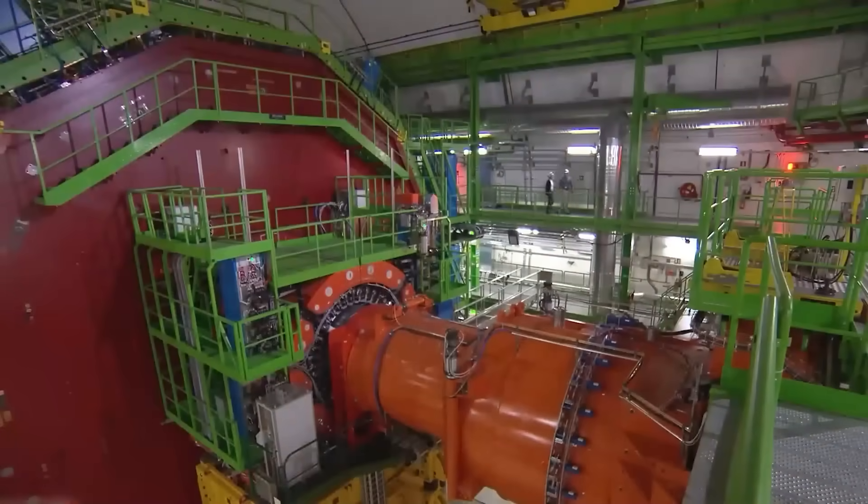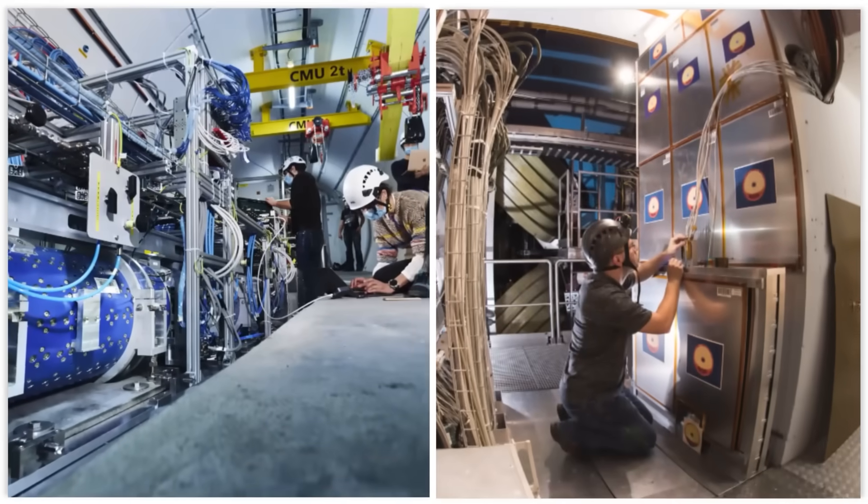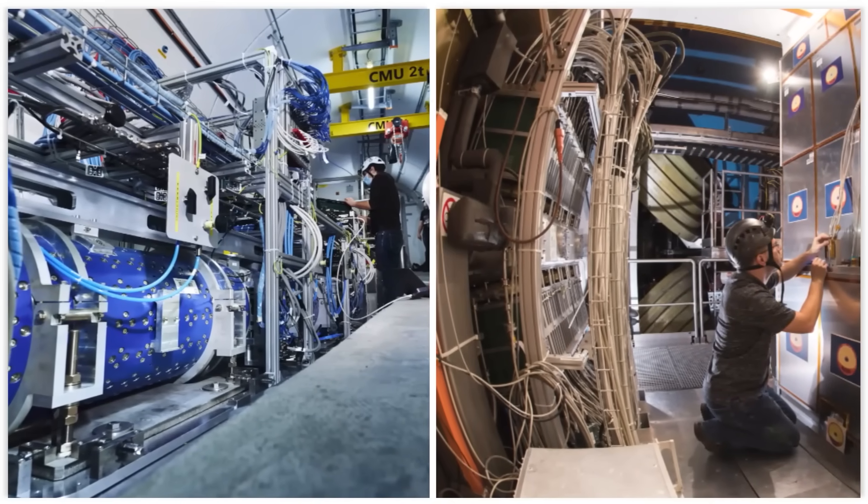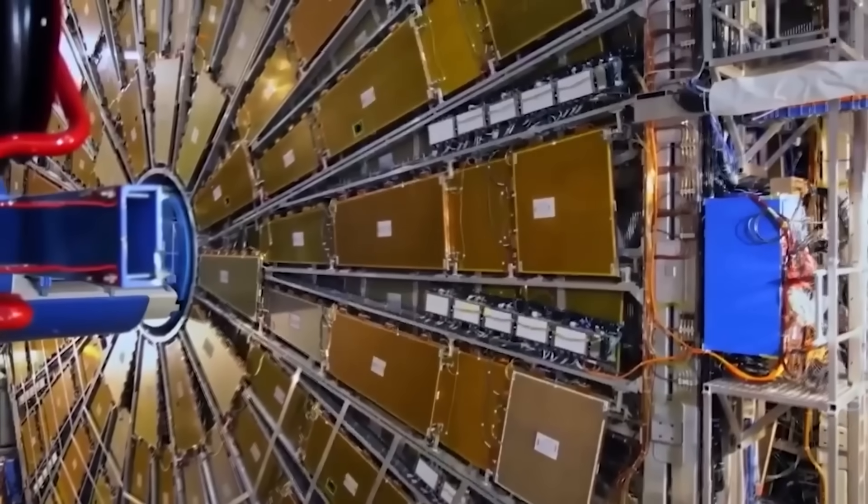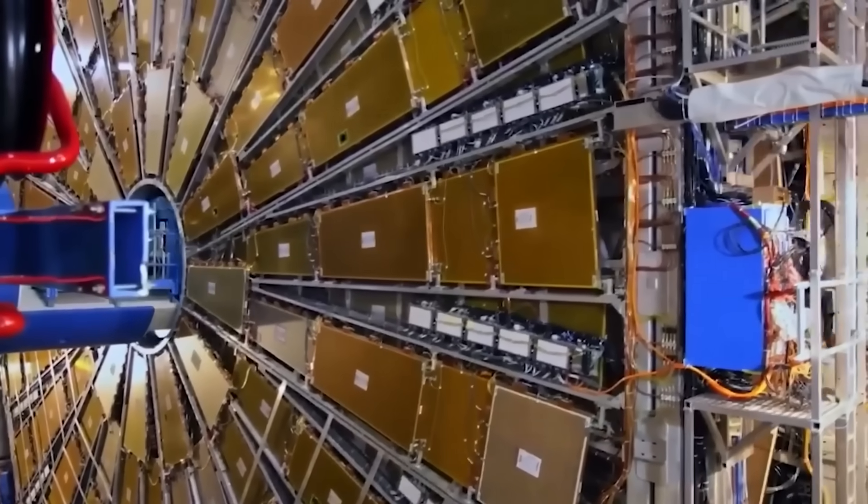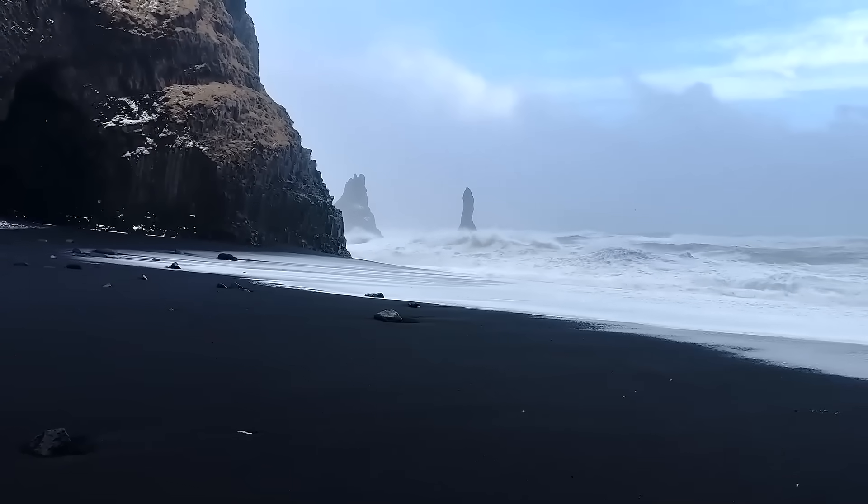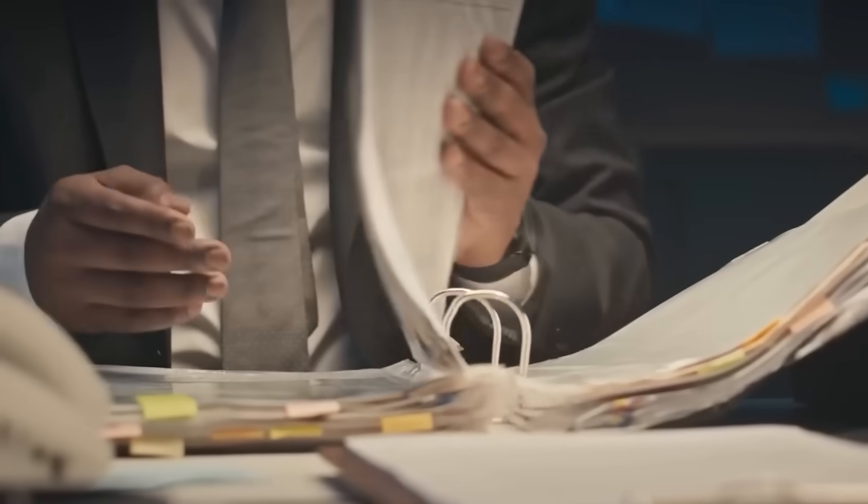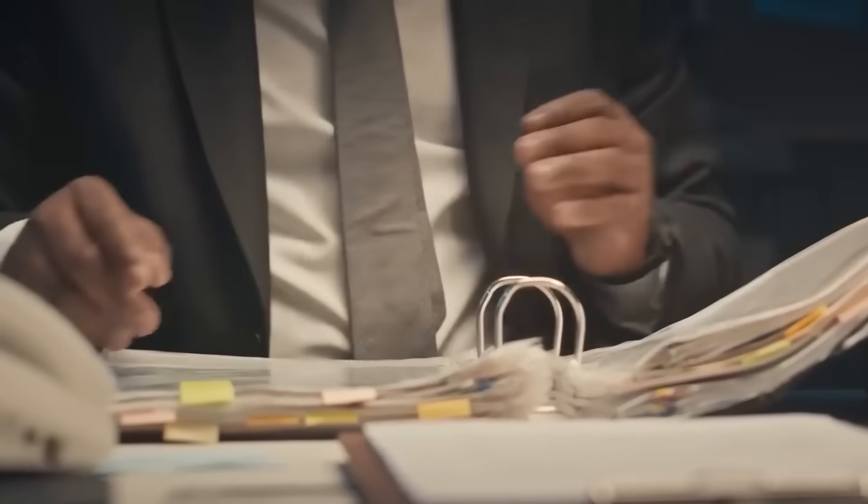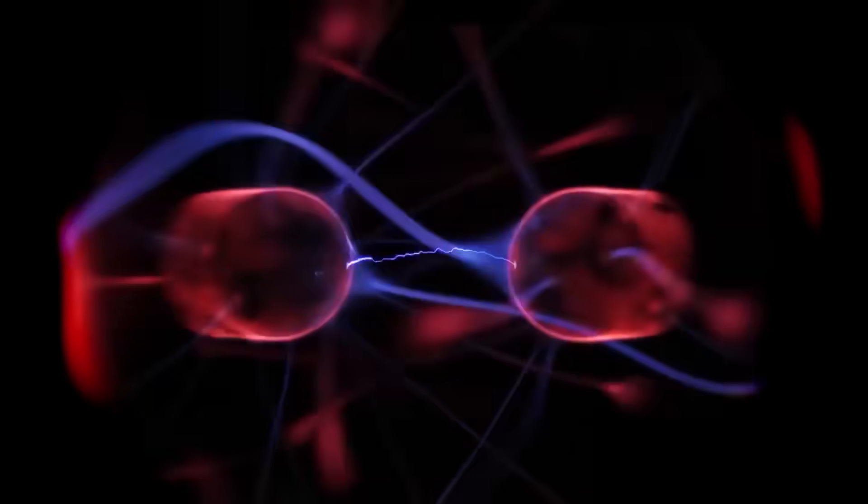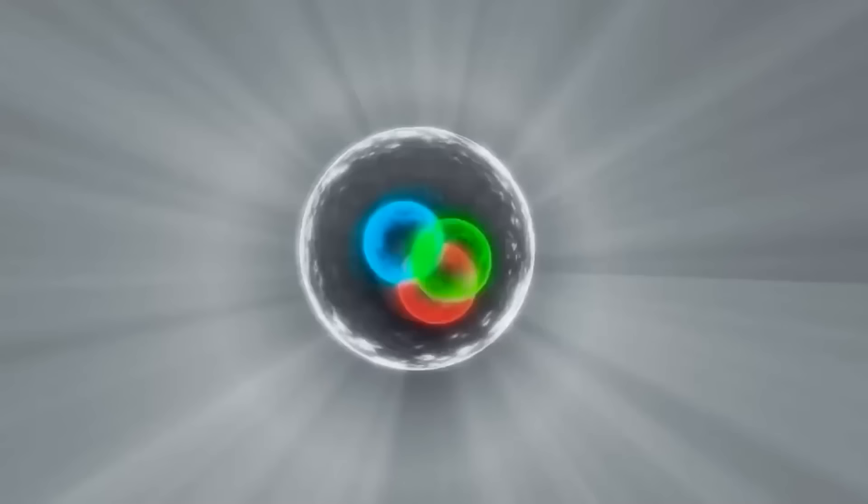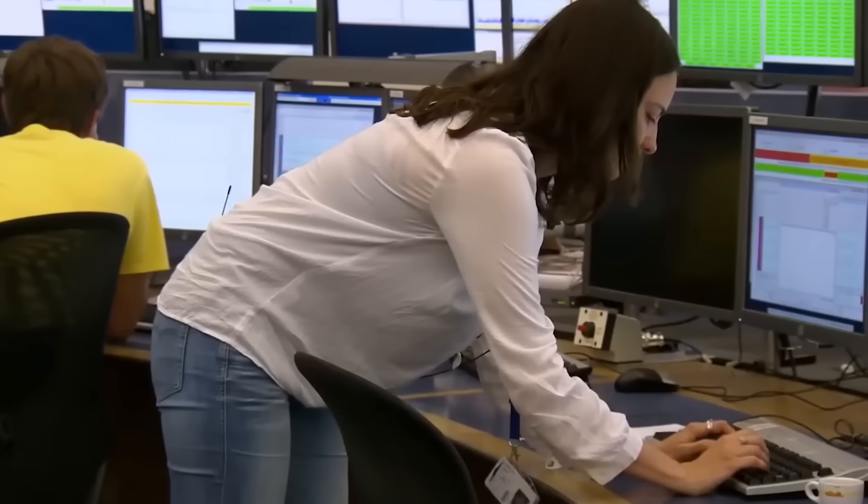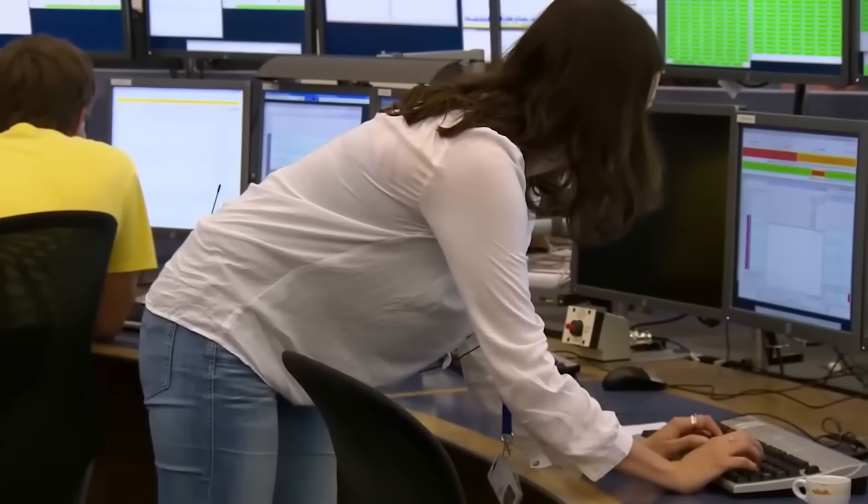This is where it gets even stranger. CERN has several side projects, programs like Phaser and Moedal, designed to look for particles from a hidden sector, other dimensions. They are, for all intents and purposes, ghost hunting machines. During the silent period, these detectors, along with equipment on Phantom Isle, registered a simultaneous, inexplicable pulse of low-energy neutrinos. The particle hadn't just ceased to exist, the data suggested it had slipped between dimensions. They may have done more than just open a door, they might have broken time itself.